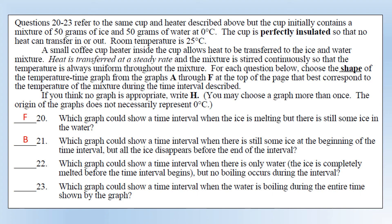Which graph shows a time interval where there is only water - no ice, no boiling? The answer is D: a straight line increase all the way through. Which graph shows a time interval where water is boiling during the entire time shown? The answer is F - the same as the first one - because a phase change is happening so there's no temperature change during that stage.